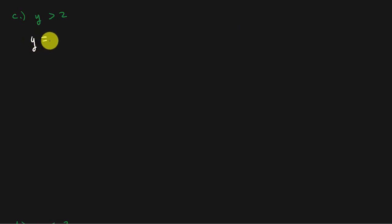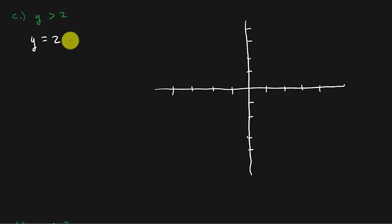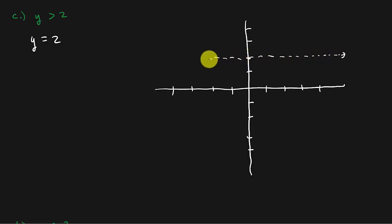Next example: change it to an equation and get y equals 2. Let's graph this. Remember, whenever you have y equals a number, that's a horizontal line. So y equals 2 is a horizontal line going through where y equals 2. And it's a dotted line.